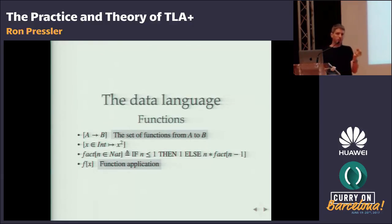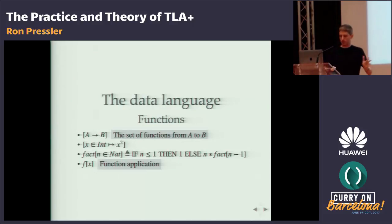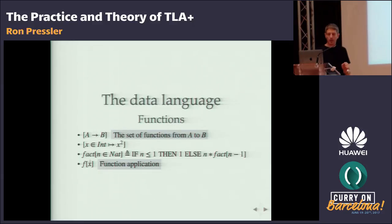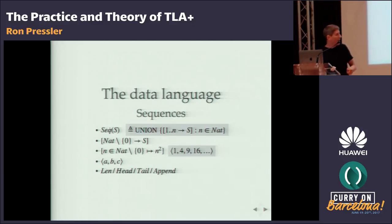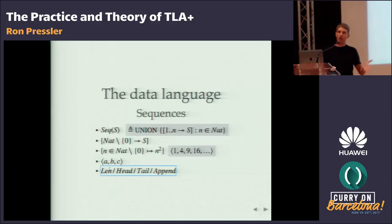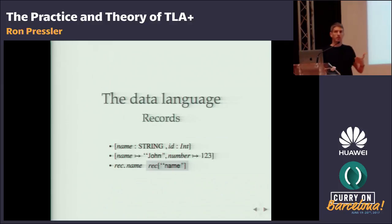Then we have functions. Functions in TLA+ are the usual mathematical functions — they don't even have to be computable. This is the set of all functions from set A to set B. We can define the square function on the integers, recursive definitions like the factorial function, and apply functions with square brackets to distinguish from operators. We also have sequences or lists, which can be finite or infinite — they are functions of a prefix of the natural numbers beginning with one. Finally, we have records like structs, which are functions from strings to values with a nice syntax.